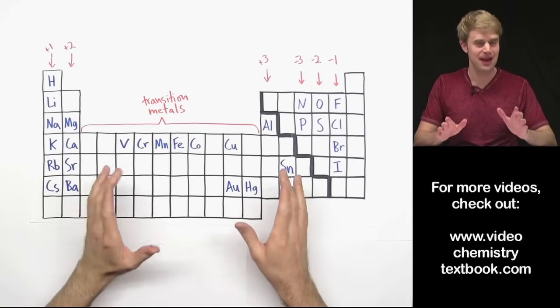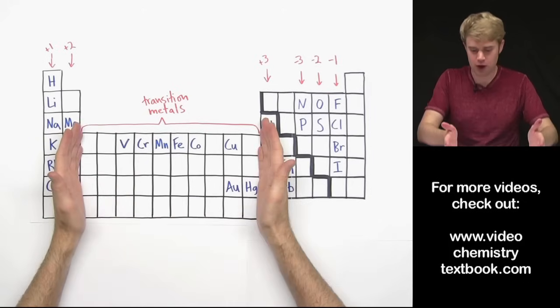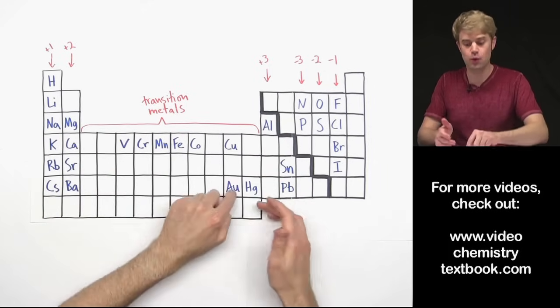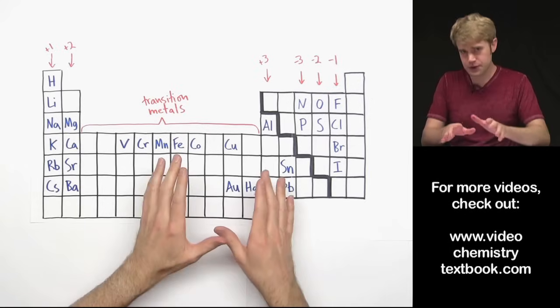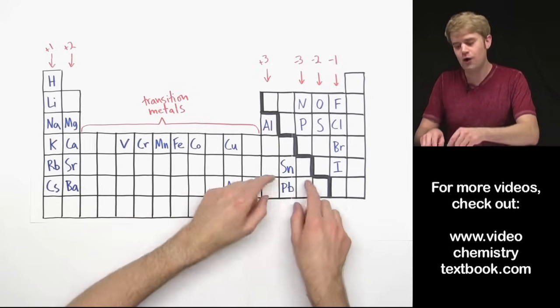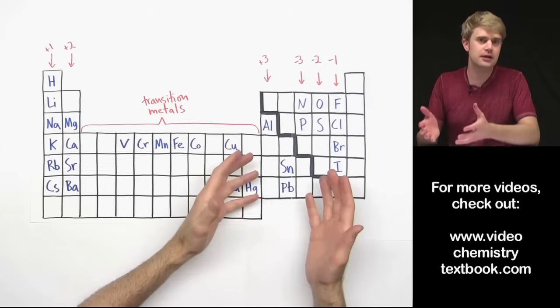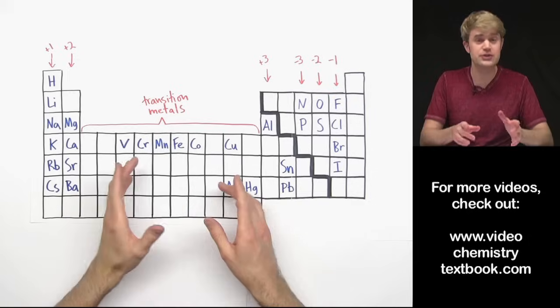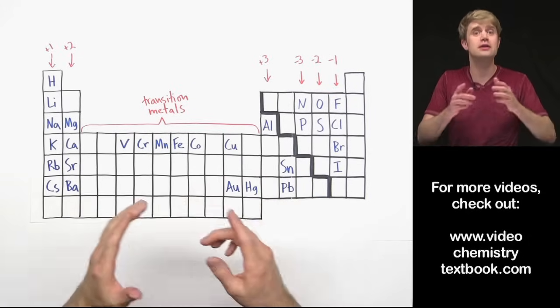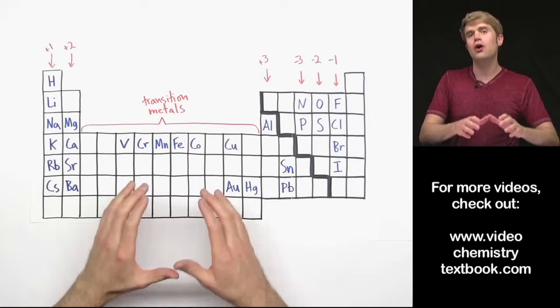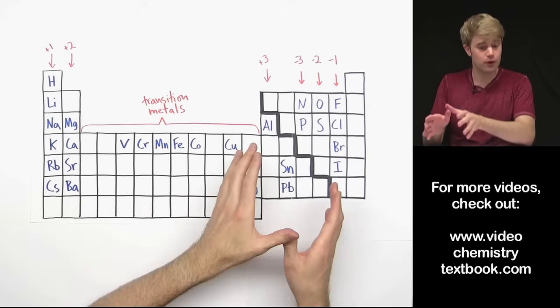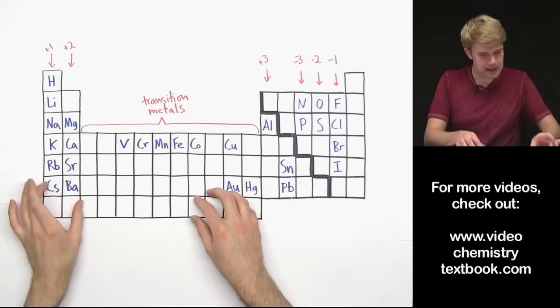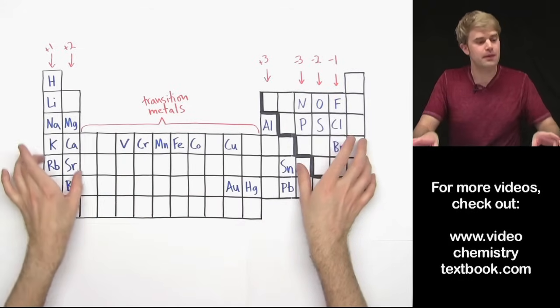So transition metals. As I said before, the transition metals are the elements in this area here of the periodic table. I've written some of the most common ones in. Now I'm also going to be talking about some of the metals over here. These guys here aren't technically transition metals, but they act a lot like the transition metals in certain ways. So I'm going to be including them in the discussion as well. Now for ionic bonding and ionic formulas, transition metals are a little bit different from the elements here and here on the periodic table.